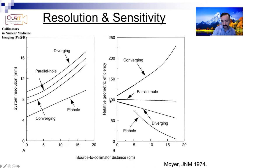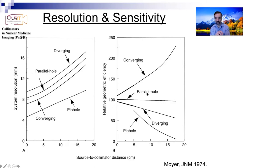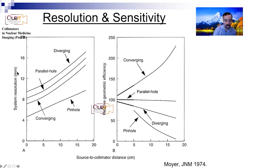Now let's focus on efficiency or sensitivity - this is quite different. Parallel hole collimators' sensitivity stays the same even when you move away from the surface. But converging collimators actually show better sensitivity the further you move away - higher is better here. Whereas for diverging and pinhole collimators, the further you get away from them, the sensitivity becomes worse. So the different collimators behave very differently with distance.